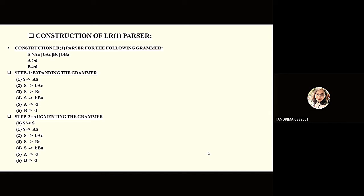What is the augmented grammar? If G is a grammar with start symbol S, then G-dash, the augmented grammar for G, is a grammar with a new start symbol S-dash and the production S-dash produces S. The purpose of this new production is to indicate to the parser when it should stop parsing and announce acceptance of the input.